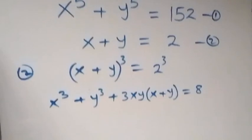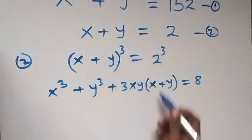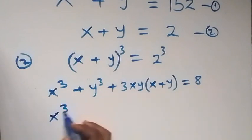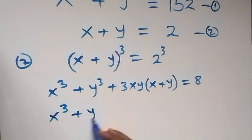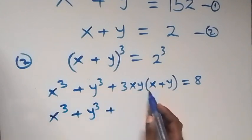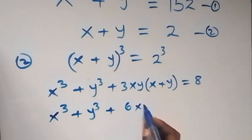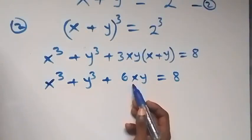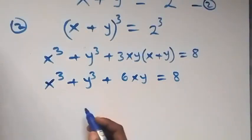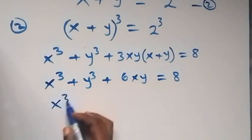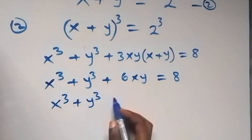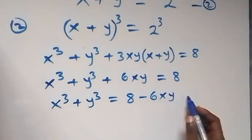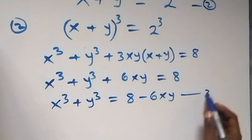Then from equation 2, x plus y equals to 2. When we substitute that here, we have x raised to power 3 plus y raised to power 3, plus 3xy times 2, that gives us 6xy, equals to 8. Then taking 6xy to the other side, this implies x raised to power 3 plus y raised to power 3 equals to 8 minus 6xy. Let's label this as equation 3.